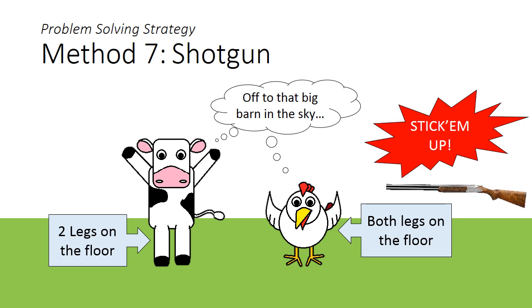Now both the cow and the chicken will have 2 legs on the ground each. The cows will raise 2 of their legs up in the air, but the chickens can only raise their wings.